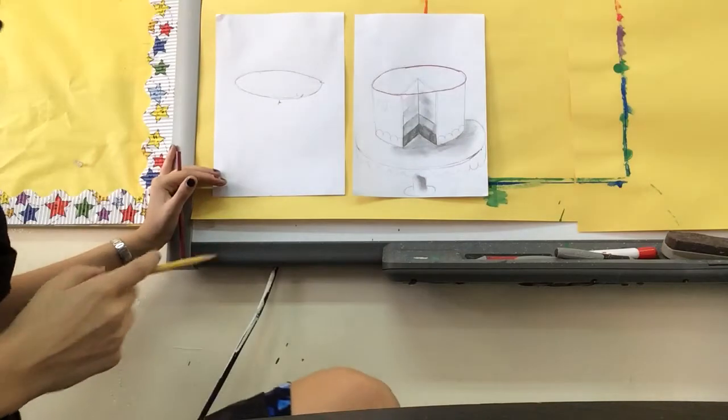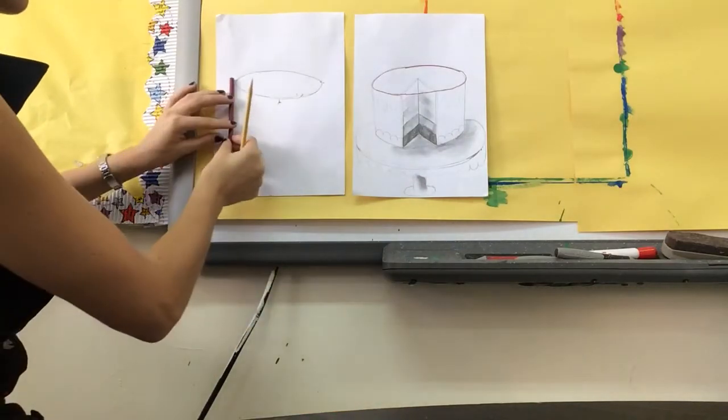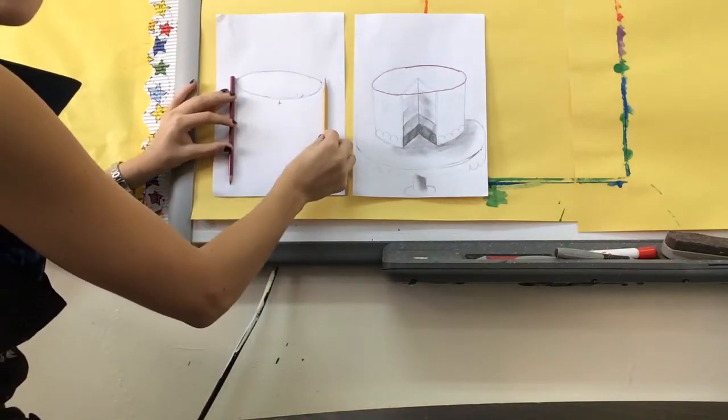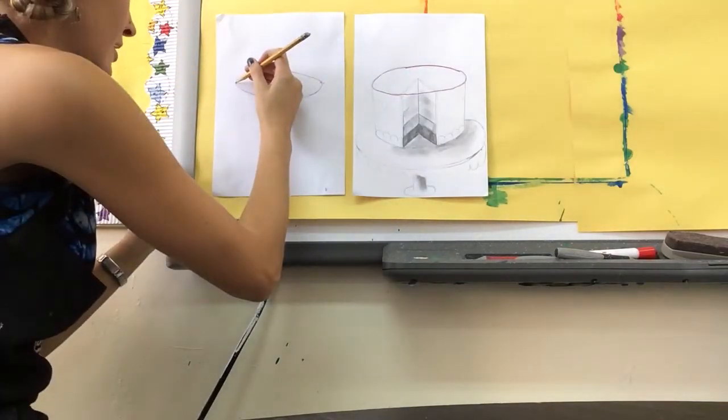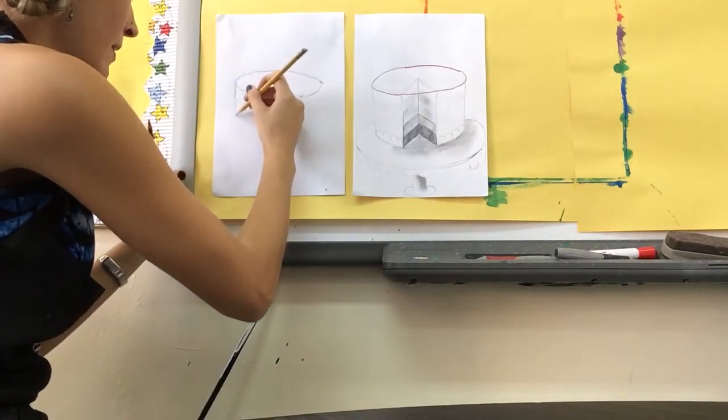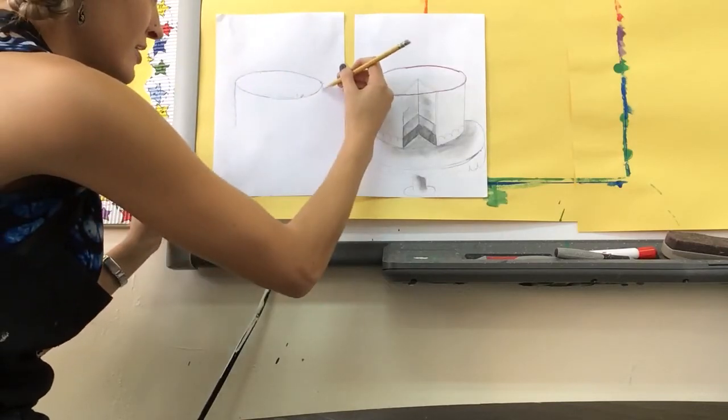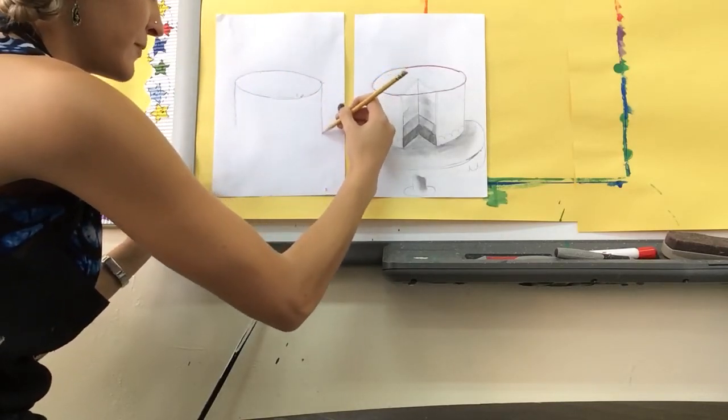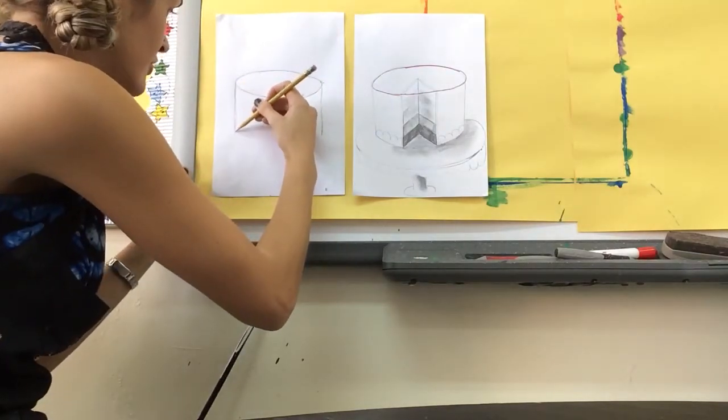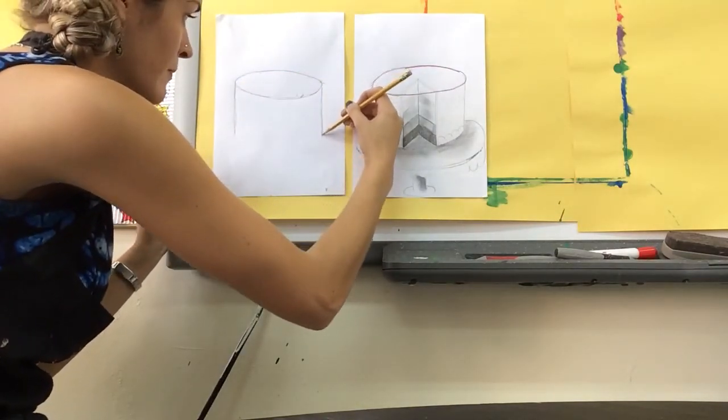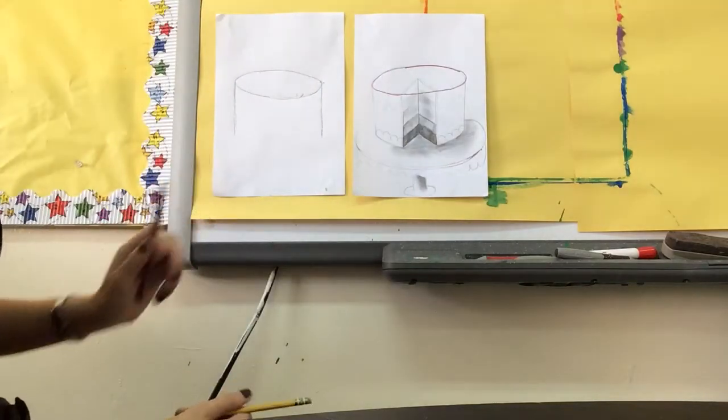Then on either side you're going to put two parallel lines. We're going to go straight down on this side and straight down on this side. You can kind of decide how big you want the cake to be.